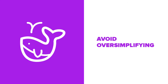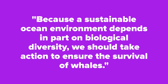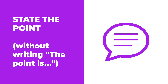Avoid making universal statements or oversimplifying an issue. For instance, "we must save the whales" may be true, but it's a dud in terms of a good thesis because it offers no detail, nuance, or even your approach. However, if we revise that to: "because a sustainable ocean environment depends in part on biological diversity, we should take action to ensure the survival of whales," then we're indicating that we understand how complex the problem is and we're offering an approach. Lastly, be sure to state the point of your paper, but without writing "the point of this paper is." That kind of meta-text doesn't really help you make your point — it ends up reading like you're just trying to increase your word count.